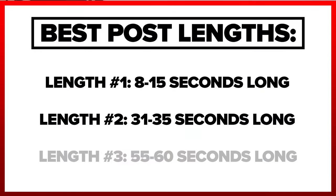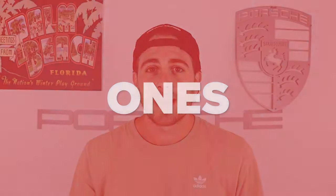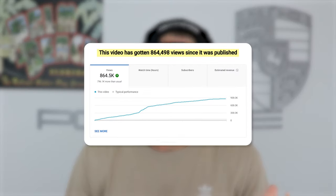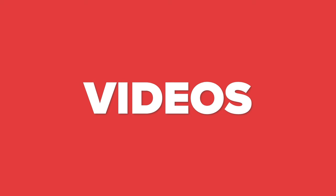When it comes to those lengths, the first and second — meaning 8 to 15 seconds or 31 to 35 seconds — are going to be the easiest for you to actually create a viral post. If you're creating posts that are 40 to 50 or 50 to 60 seconds long, it could be the reason you're not getting the views you want. One of the simplest ways to test this is to create multiple videos on the same exact topic.